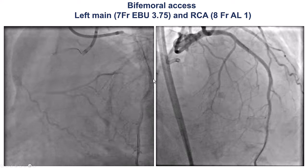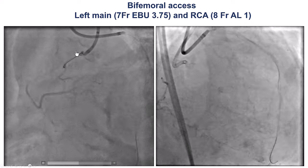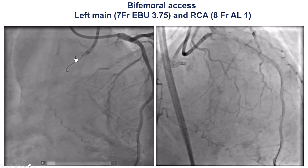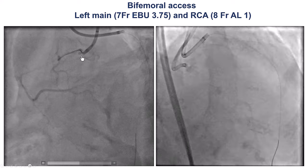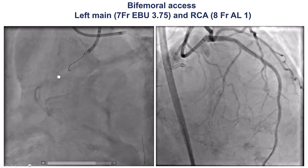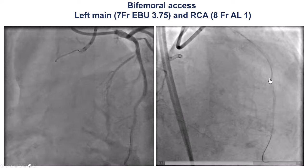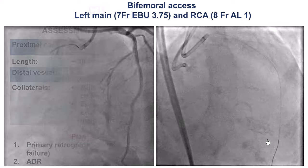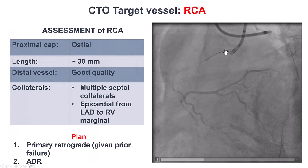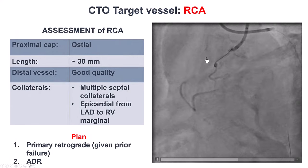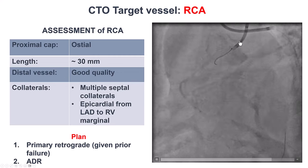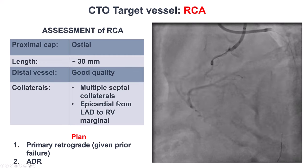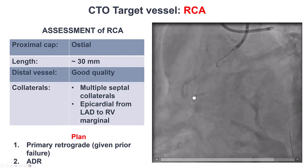This is the coronary angiogram. There is an occlusion at the ostium of the right coronary artery. There is a small nub, a small segment of the vessel, and a conus branch that is patent. We have retrograde filling through septal collaterals from the LAD. This is an osteal occlusion with an occlusion length of about 30 millimeters. The distal vessel, the distal RCA, seems to be of good quality and is filling through septal collaterals.